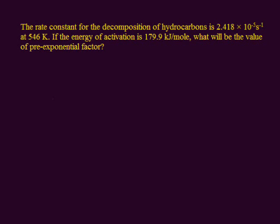The rate constant for the decomposition of hydrocarbons is k = 2.418 × 10⁻⁵ per second. The temperature is given as T = 546 K. The energy of activation is given as Ea = 179.9 kJ per mole. The question asks: what will be the value of the pre-exponential factor A, also known as the frequency factor? It indicates the frequency of collisions between reacting molecules.